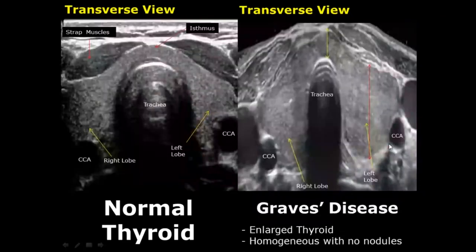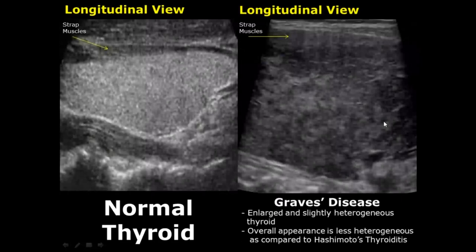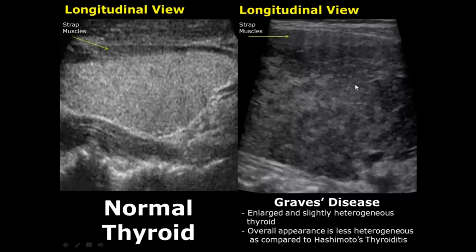Graves disease is a common cause of hyperthyroidism. The thyroid can appear enlarged and homogeneous without any nodules. In this image you can see heterogeneous areas in the thyroid, but if we compare it to Hashimoto's thyroiditis, it is less heterogeneous. So the echo texture is somewhat smoother in Graves disease. Remember: Hashimoto's thyroiditis is hypothyroidism and Graves disease is hyperthyroidism.